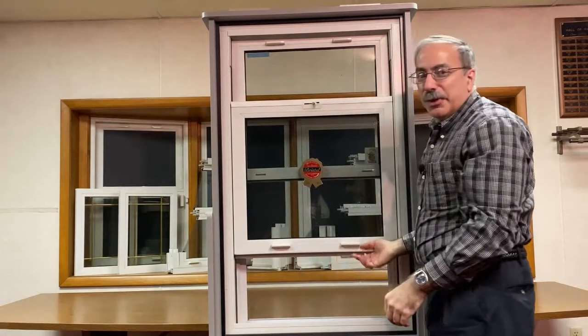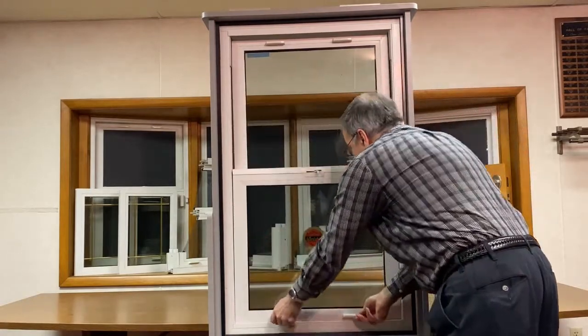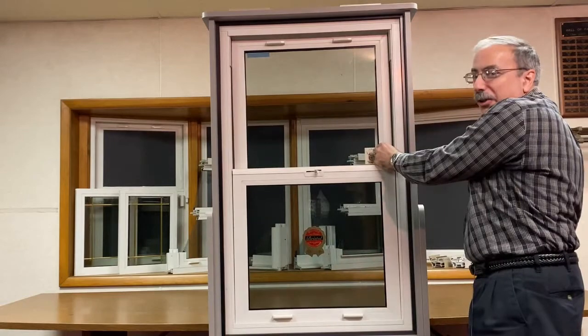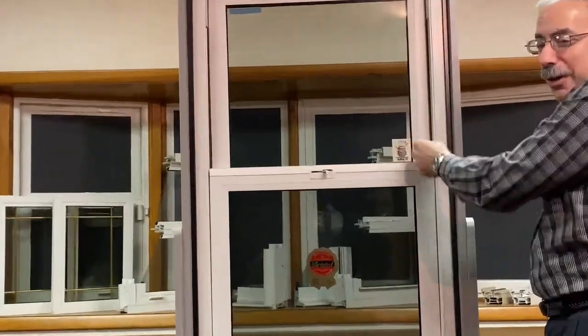If you want to limit your ventilation, what you can do is open the ventilation lock located at the bottom side of the top sash.